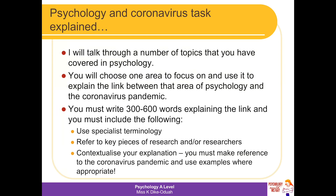For example, for social influence, you might want to narrow it down into the types of conformity. You're going to write 300 to 600 words explaining the link between that chosen topic area and the coronavirus pandemic. You must use specialist terminology, refer to key pieces of research and researchers, and contextualise your answer — meaning you must actually reference the coronavirus throughout your response.